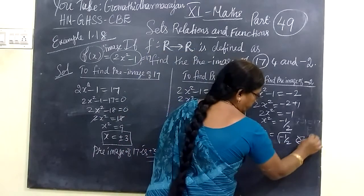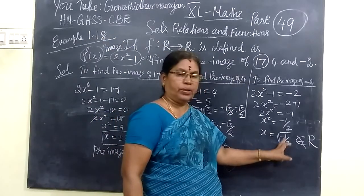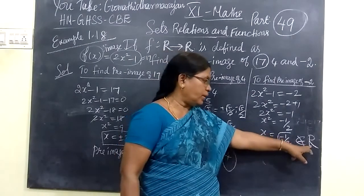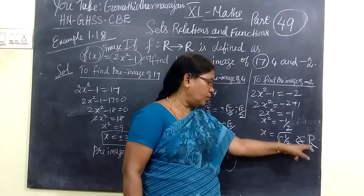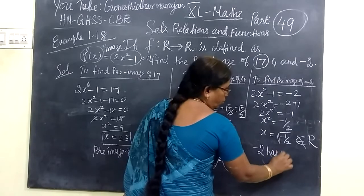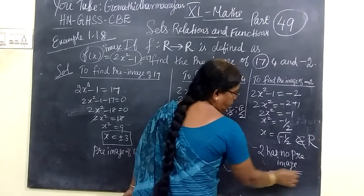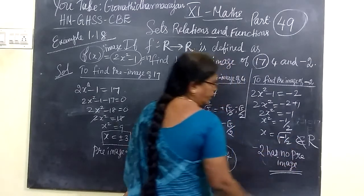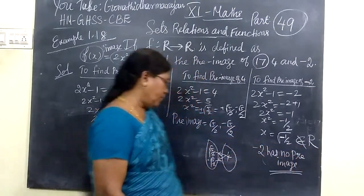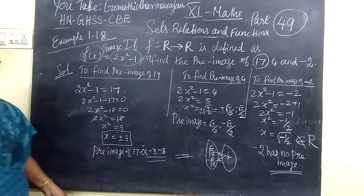We are selecting only real values. Since x² = -1/2 has no real solution, -2 has no preimage in the real numbers. So the preimage of -2 does not exist. Thank you.